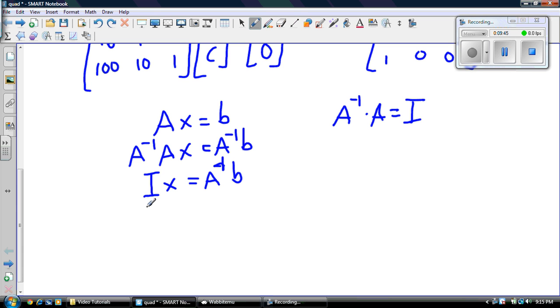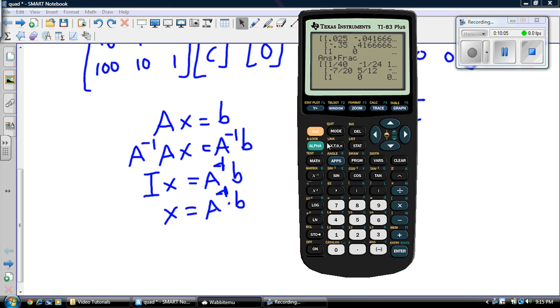And your identity matrix is if you multiply anything by the identity matrix, you always just get the same matrix back. It's like multiplying by 1. So, now we recognize I times X is just going to be X. It's the identity matrix. So, A inverse times B gives me X. So, we'll go back to our graphing calculator.